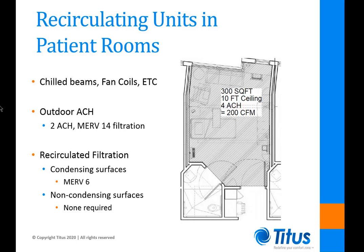One way to combat excessive reheat is to use a recirculating unit in patient rooms — this could be a chill beam, fan coils, PTAC, or VRF. Requirements for recirculating units include still providing the minimum two outdoor air changes per patient room, maintaining the same filtration levels as an all-air system (MERV 8 upstream of the coil and MERV 14 as the final filter), and for condensing units like fan coils, VRF, or PTAC, a MERV 6 filter is required. Non-condensing surfaces like chill beams have no filter requirement over the coil.